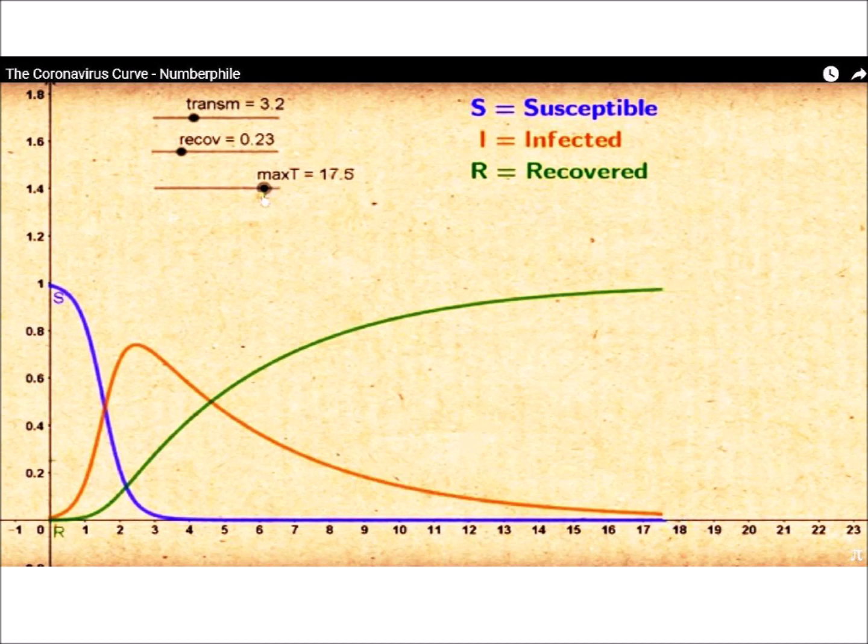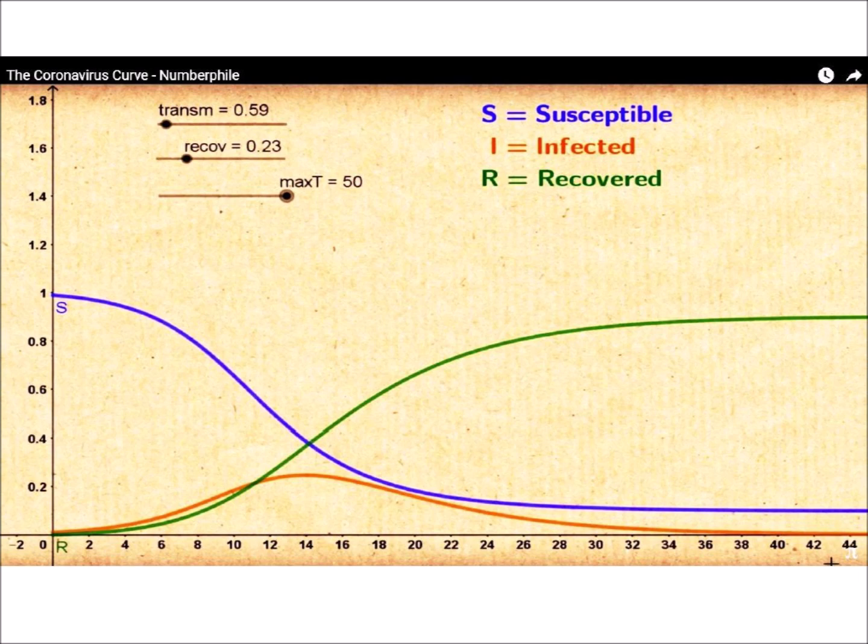The peak of the infection can be flattened by reducing the rate of transmission. This lowers the maximum number of people that will be sick at the same time and lowers the burden on medical treatment facilities. Notice that as the number of infected people is reduced, some susceptible individuals never get exposed to the virus and never get infected.